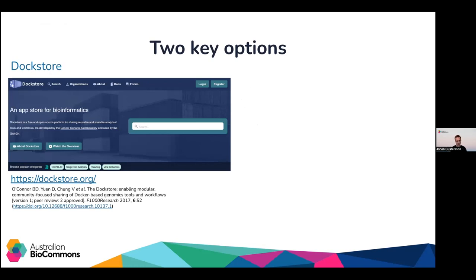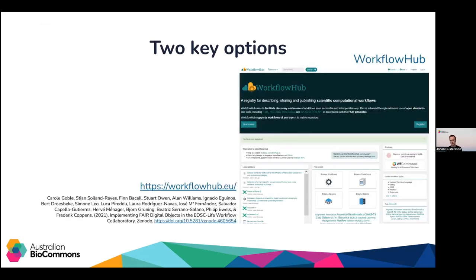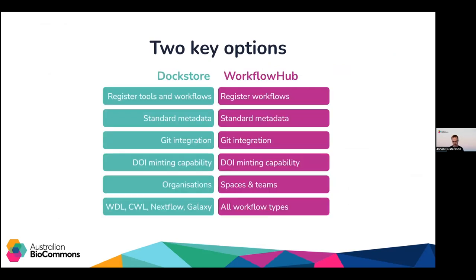There are two key registry options at the moment: Dockstore, and Workflow Hub, which we're focusing on today. At a high level, they're very similar — both allow you to register workflows, have a standard metadata set, integrate with Git, and can generate DOIs. Dockstore has organizations; Workflow Hub has spaces and teams. Dockstore focuses on WDL, CWL, Nextflow and Galaxy, whereas Workflow Hub is workflow-agnostic — it supports all workflow types. We work directly with the Workflow Hub team, which is why we focus on that platform. If there's sufficient interest in Dockstore, we could potentially do a repeat workshop focused on it.